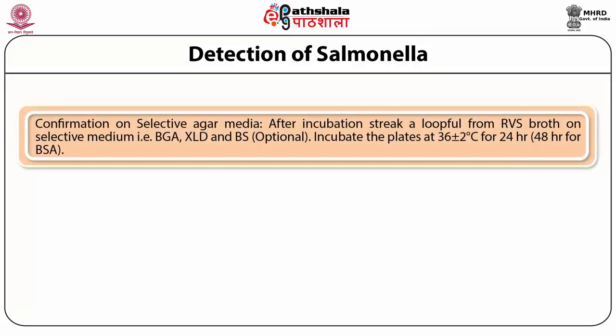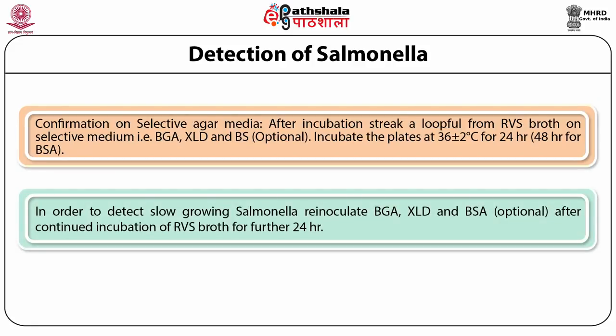For confirmation on selective agar media, after incubation streak a loopful from RVS broth on selective medium — BGA, XLD, and BS (optional) — and incubate the plates at 36 ± 2°C for 24 hours, and 48 hours for BSA. To detect slow-growing Salmonella, reinoculate BGA, XLD, and BSA after continued incubation of RVS broth for a further 24 hours.